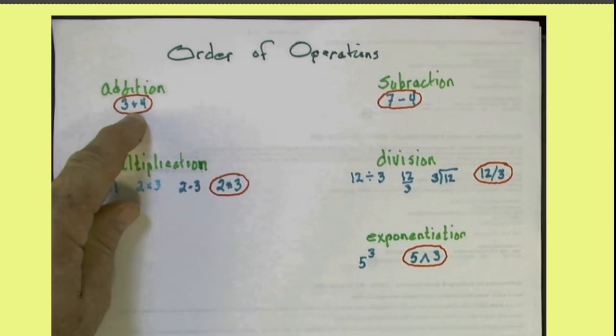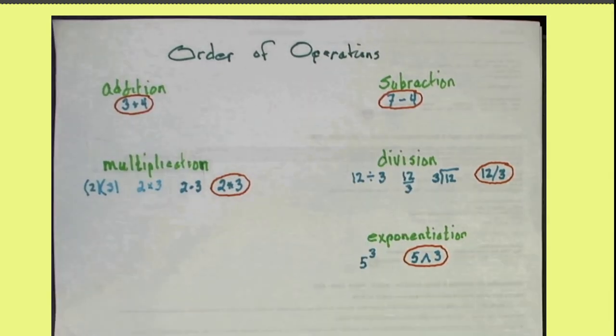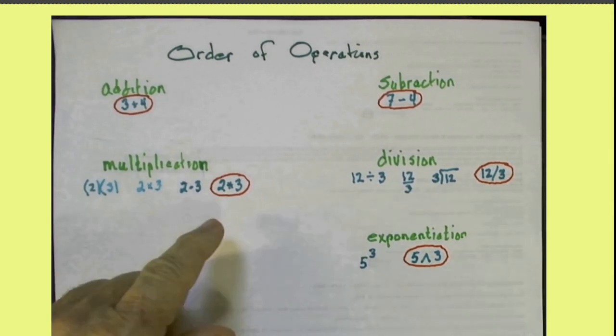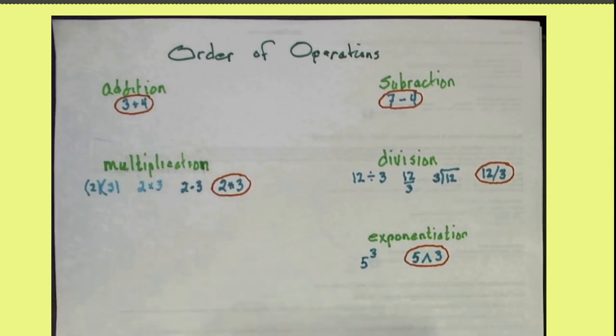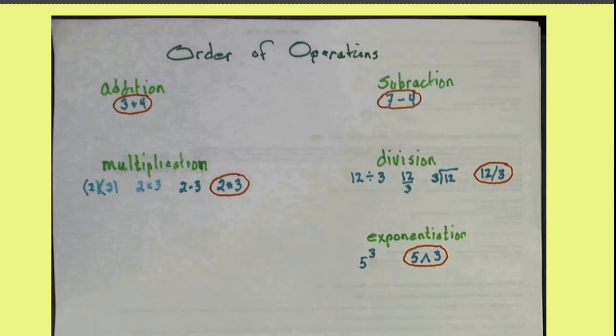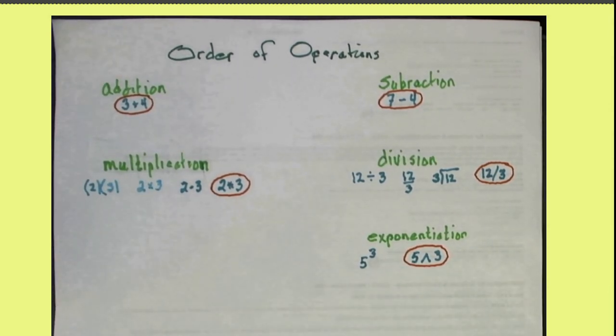Addition is just 3 plus 4. Subtraction is 7 hyphen 4. Multiplication, 2 star 3. Division, 12 slash 3. And exponentiation, 5 carat 3.